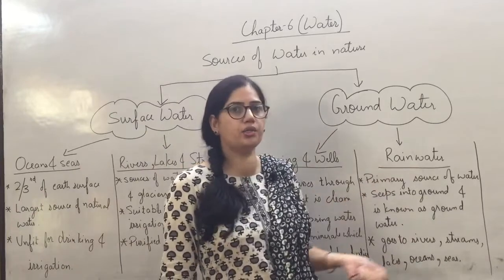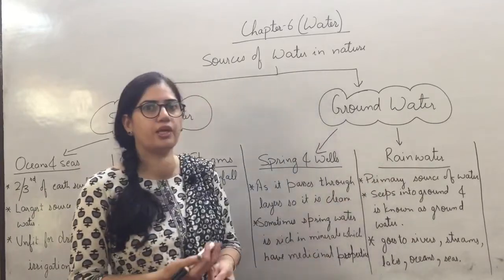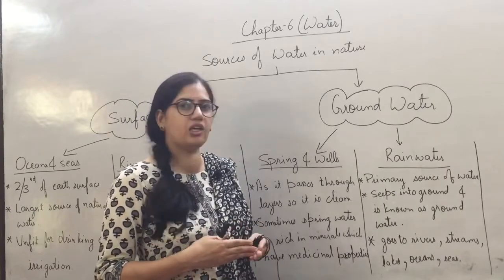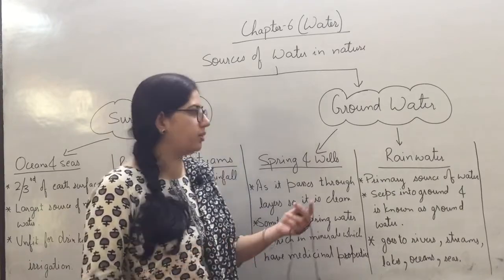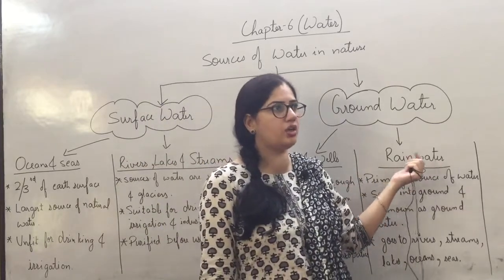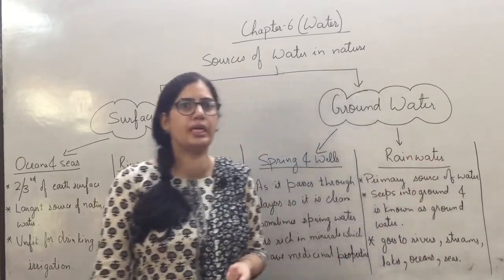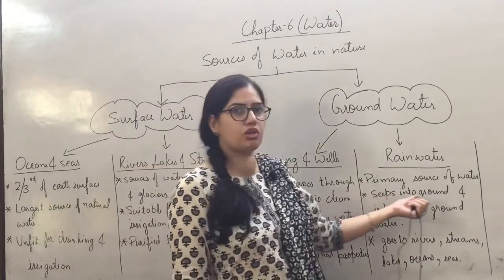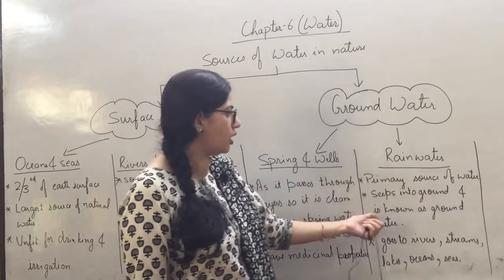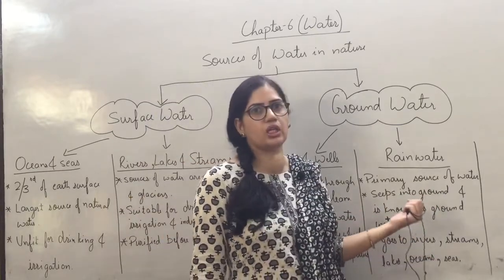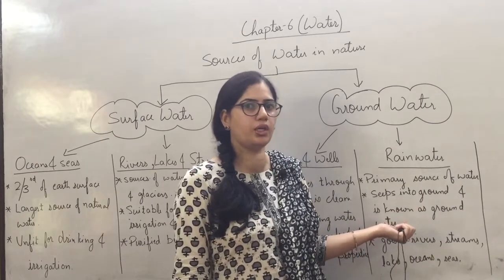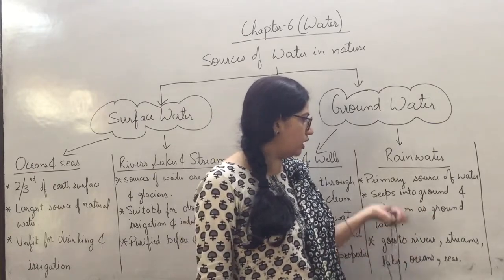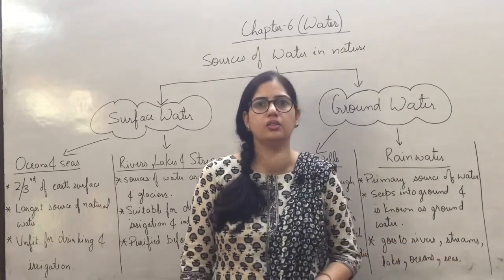Then we have rain water. Rain normally occurs in the form of precipitation. Precipitation can be in the form of water, hail, or snow. This is the primary source of water. It seeps into the ground and becomes ground water. It also goes to rivers, streams, lakes, oceans and seas.